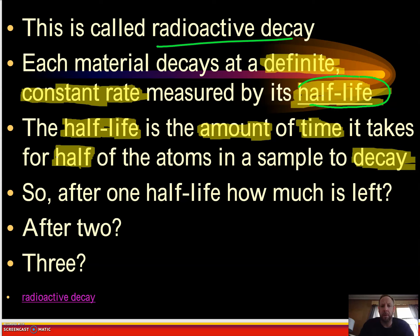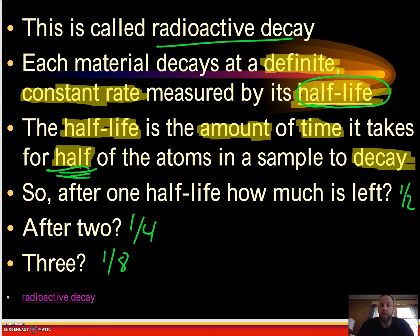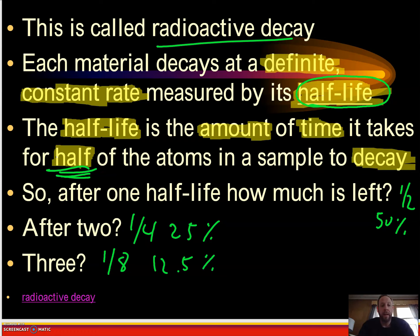We measure this using something called a half-life. In a half-life, the amount of time it takes half of the atoms in the sample to decay. So in one half-life, half is left. After two half-lives, one quarter is left, and after three, one eighth. So that's 50% for one half-life, 25% for two half-lives, and 12.5% for three half-lives.